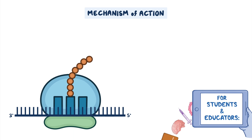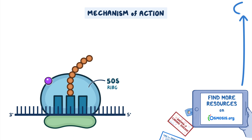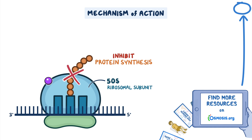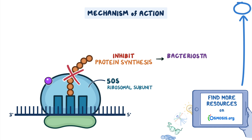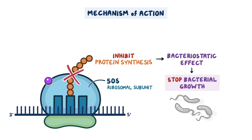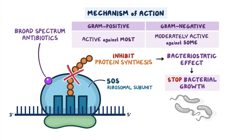Once administered, macrolides target the bacterial 50S ribosomal subunit in order to inhibit protein synthesis. As a result, these medications have a bacteriostatic effect, meaning they stop bacterial growth. They're also considered broad-spectrum antibiotics, as they're active against most gram-positive bacteria and moderately active against some gram-negative bacteria.